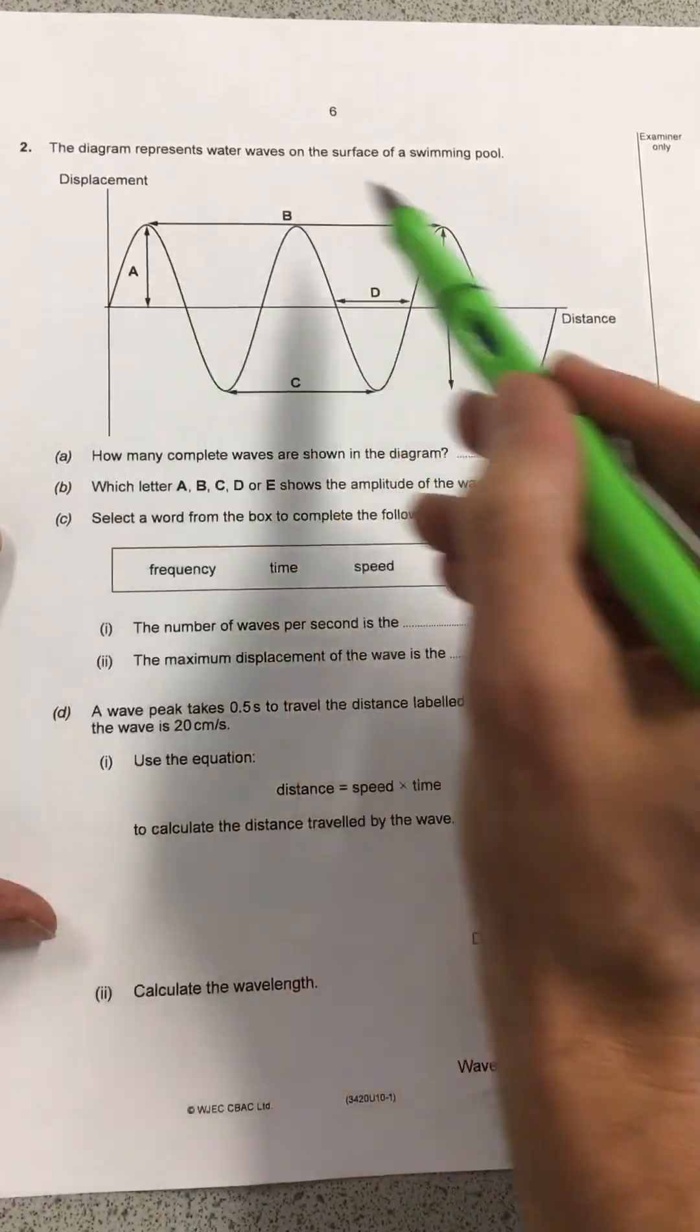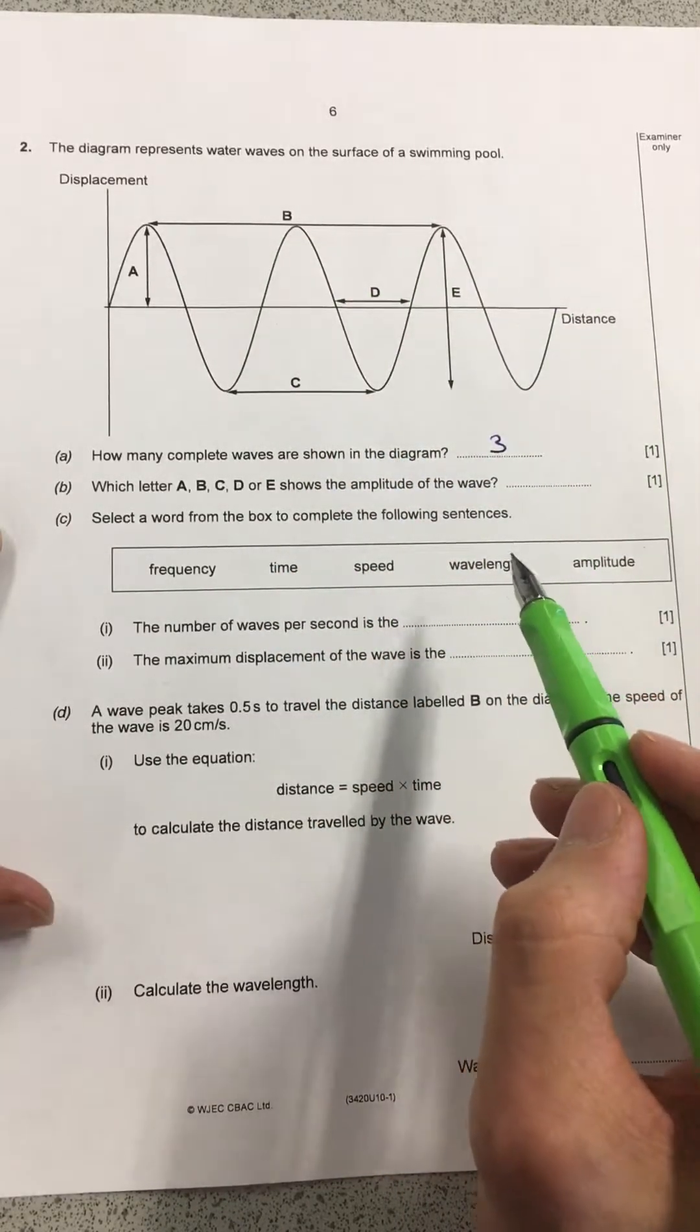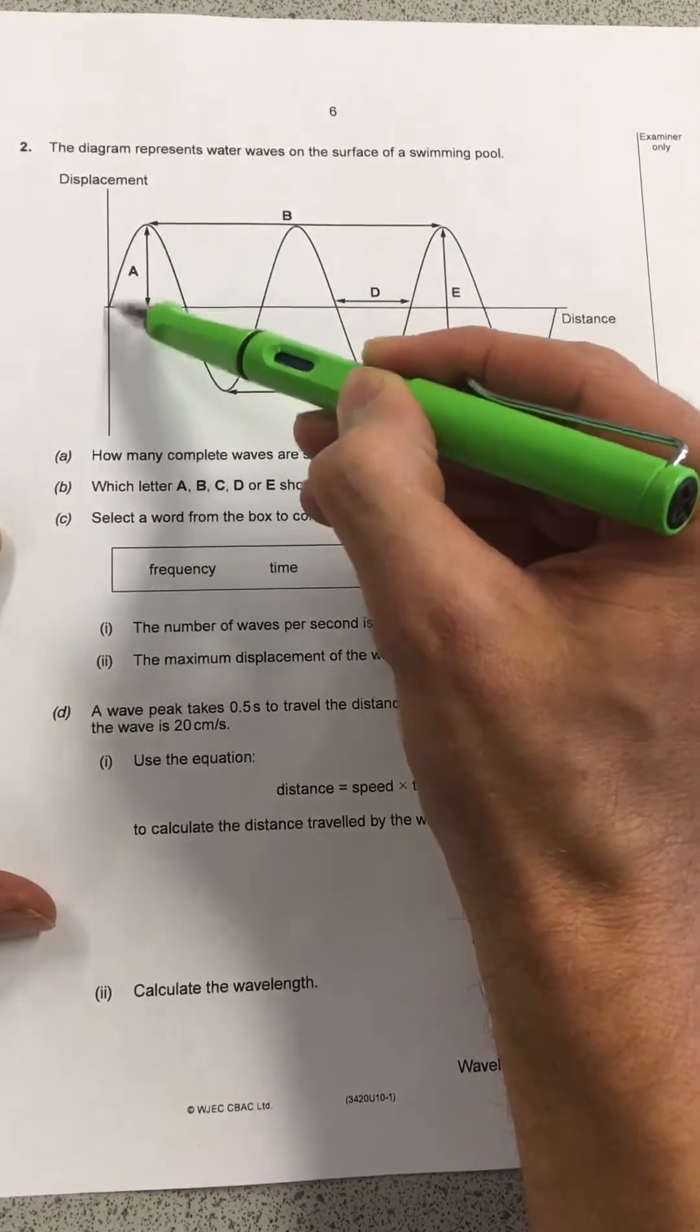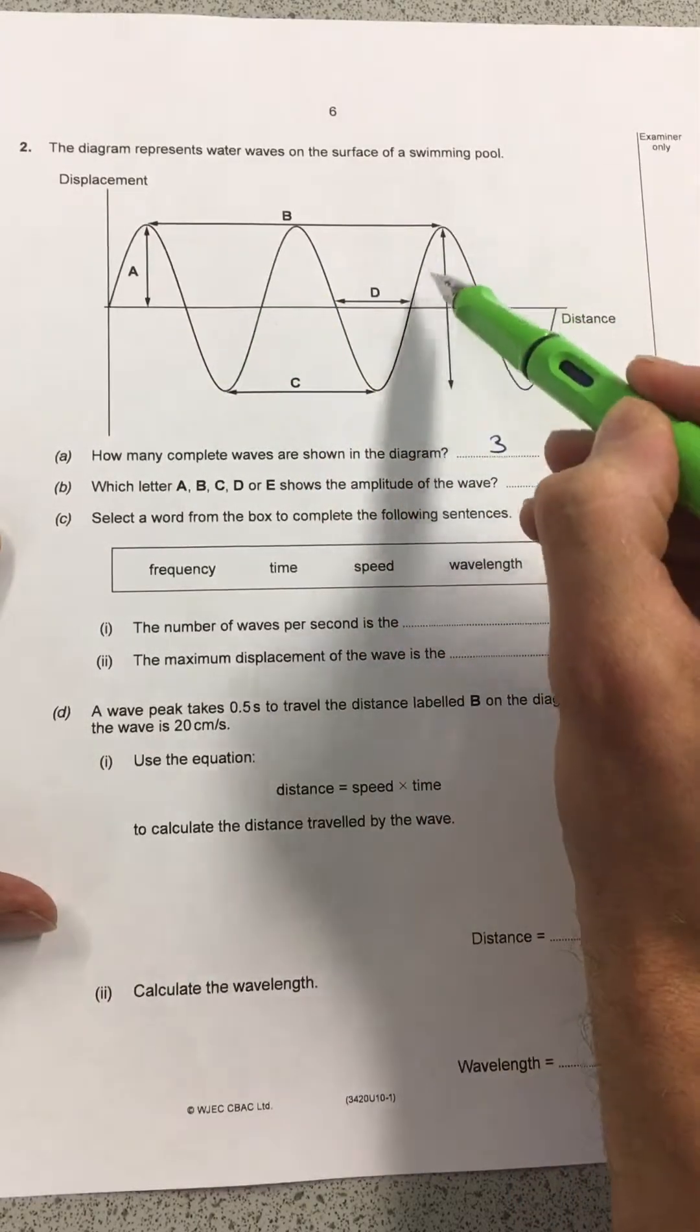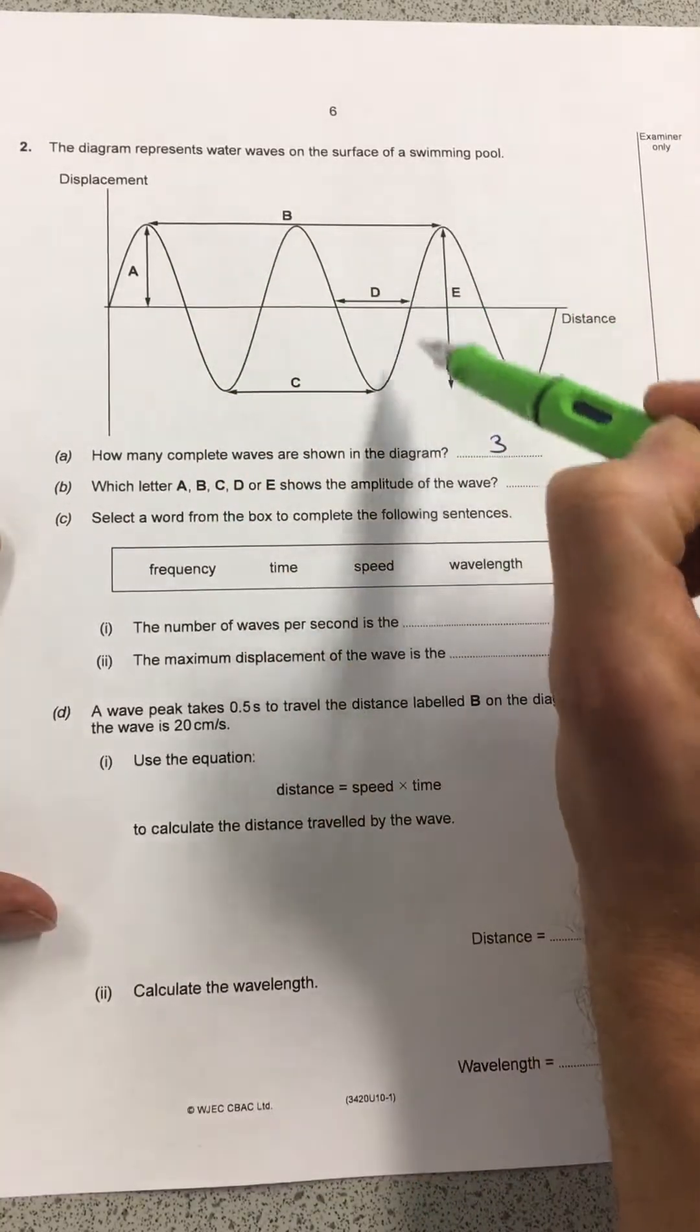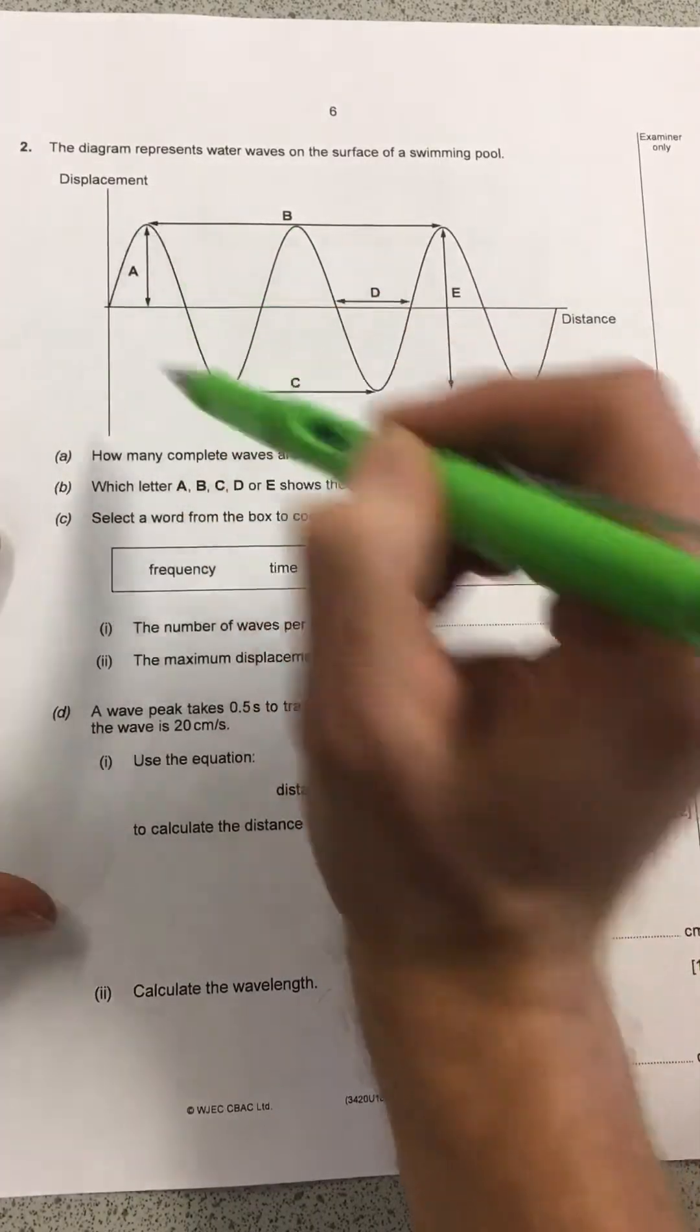Then it's asking me to decide which of these letters corresponds with the amplitude. Now you've been taught that the amplitude is the height, the maximum displacement of the wave from this middle line here. You might get confused with E but it's not. It's A. It's just this height from the line here. E is actually the volume, which is something we don't need to worry about. So A for that one.